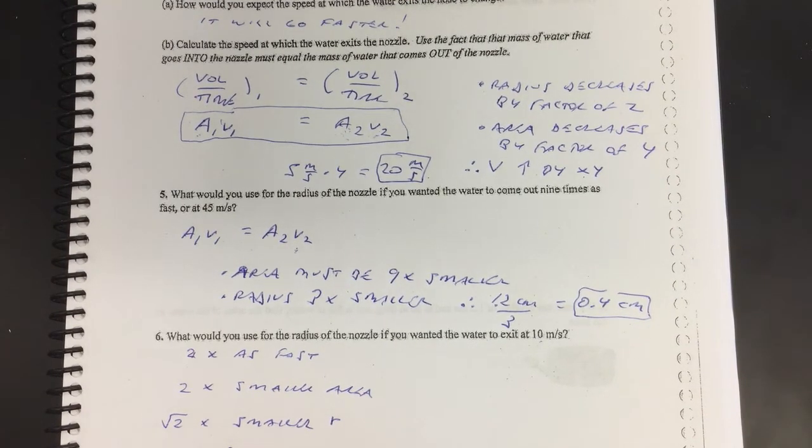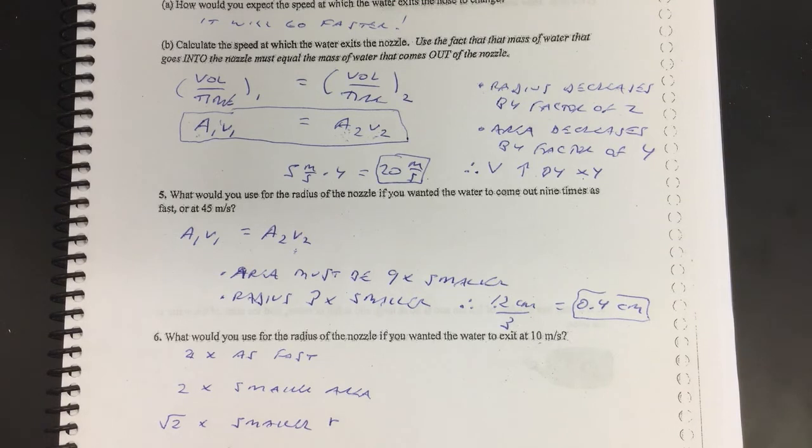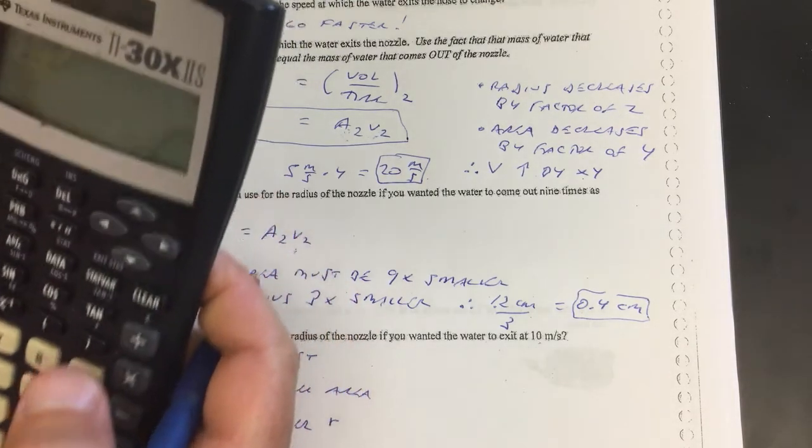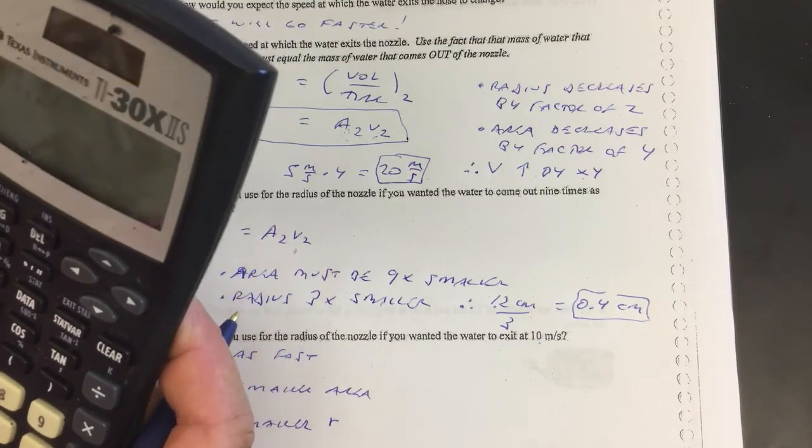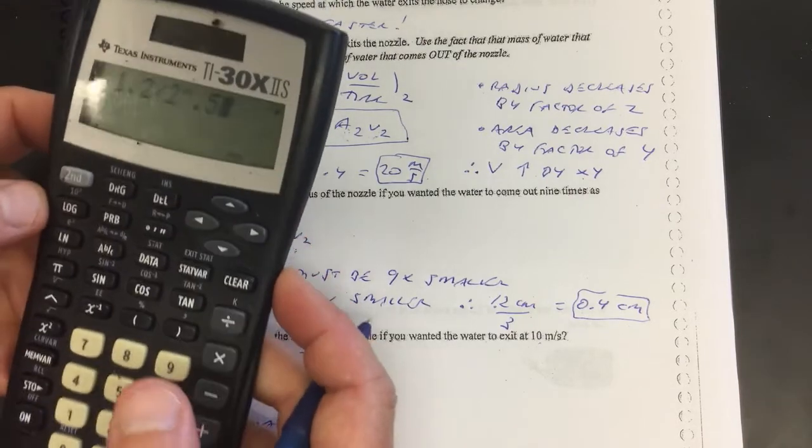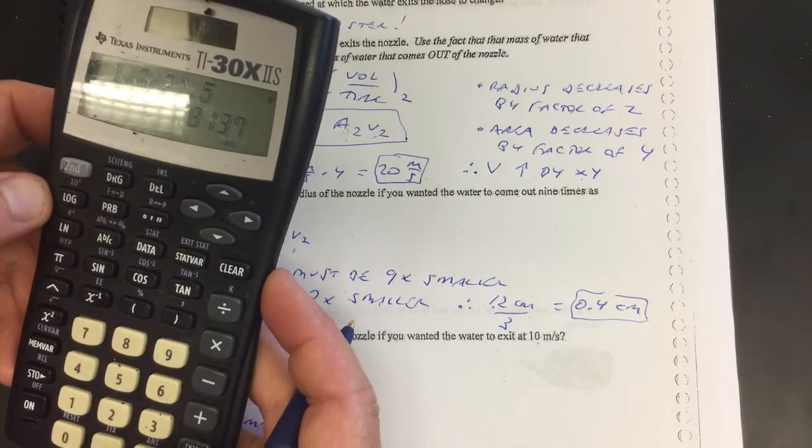And so let's see what that comes out to be. So we get 1.2, whoops I messed up, 1.2, and then divided by the square root of 2, 2 to the point five, enter, so it looks like point eight five-ish, 0.85 centimeters.